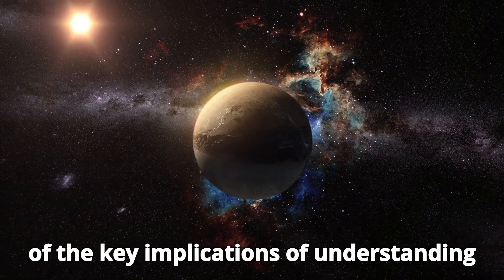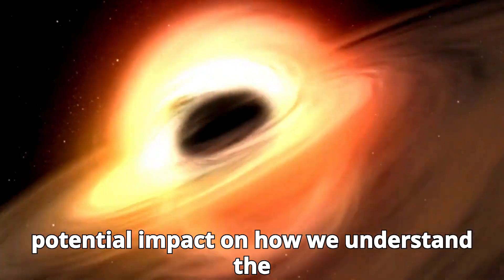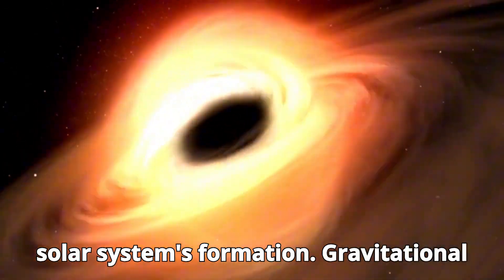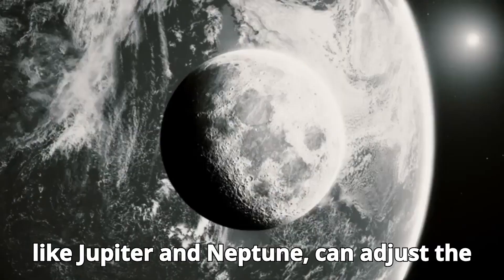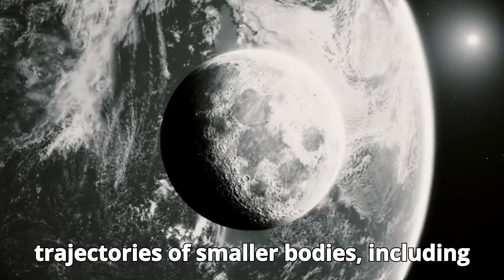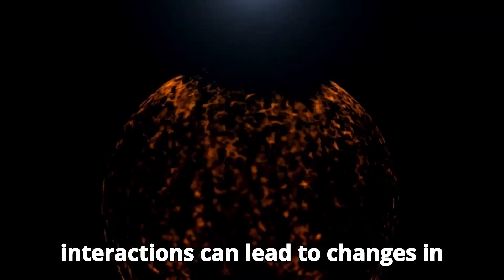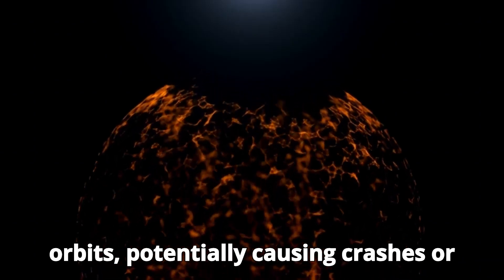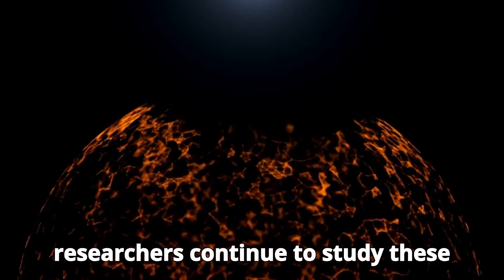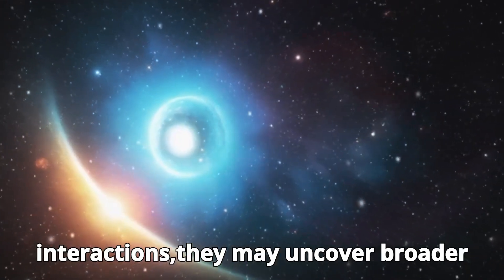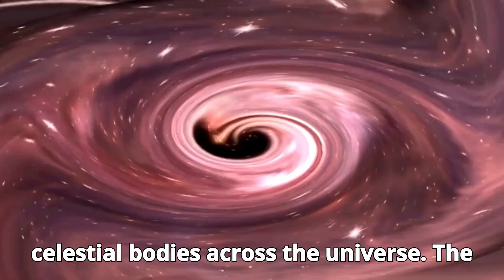One of the key implications of understanding Pluto's orbital mechanics is its potential impact on how we understand the solar system's formation. Gravitational impacts from neighboring giant planets, like Jupiter and Neptune, can adjust the trajectories of smaller bodies, including those in the Kuiper Belt. Such interactions can lead to changes in orbits, potentially causing crashes or ejections from the solar system. As researchers continue to study these interactions, they may uncover broader patterns that govern the behavior of celestial bodies across the universe.